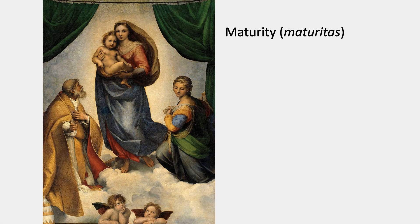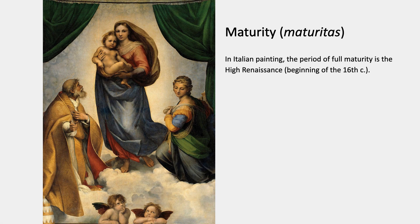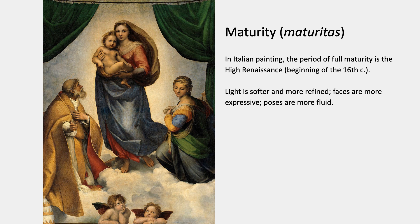Then comes maturity — maturitas. In Italian painting that would be the high Renaissance, the beginning of the 16th century. Here the light is softer and more refined, the faces are more expressive, the poses are more fluid. That would be a fairly typical description as defined in an art history textbook. And that is Raphael's Sistine Madonna in Dresden.